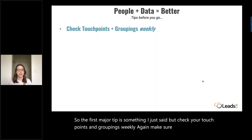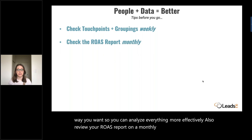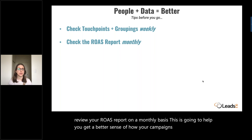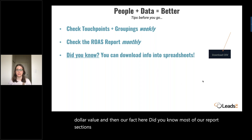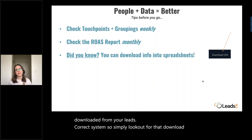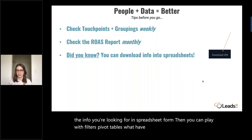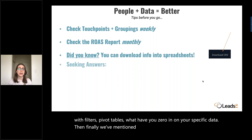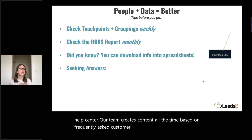Also review your ROAS report on a monthly basis — this will help you get a better sense of how your campaigns are doing based on dollar value. And did you know most of our report sections can be downloaded from your LeadsRx system? Simply look for that download CSV link to get the info you're looking for in spreadsheet form. Then you can play with filters, pivot tables, and zero in on your specific data. We've mentioned the online help center a few times — if you have questions, definitely use the search bar there. Our team creates content all the time based on frequently asked customer questions, and we have tons of articles and videos you can search.